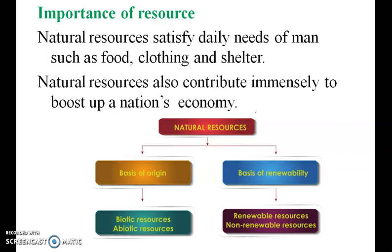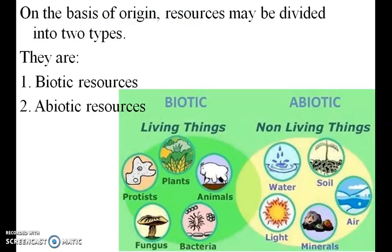Natural resources satisfy the daily needs of man such as food, clothes and shelter. Resources are divided into two main groups: on the basis of origin — biotic resources and abiotic resources; and on the basis of renewability — renewable resources and non-renewable resources. On the basis of origin, resources may be divided into two types.